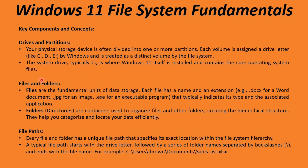Files are the fundamental units of data storage. They have a name and extension, such as .docx for Word documents, .txt for text documents, .jpg for image files, and .exe for executables. The extension also tells Windows what program to open the file with — for example, double-clicking a .pdf file will open it with your default PDF reader, whether that's Adobe Acrobat Reader or Microsoft Edge. You can also change the default program if you prefer a different application.